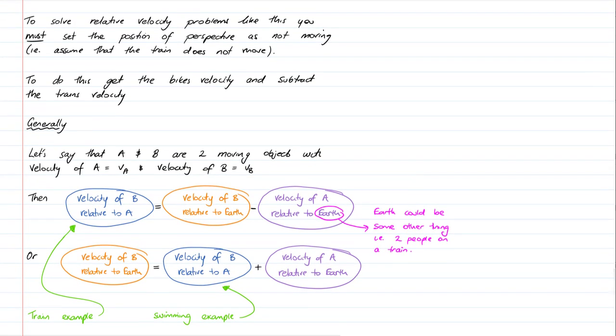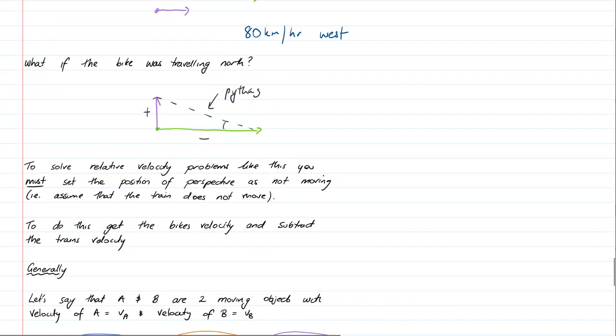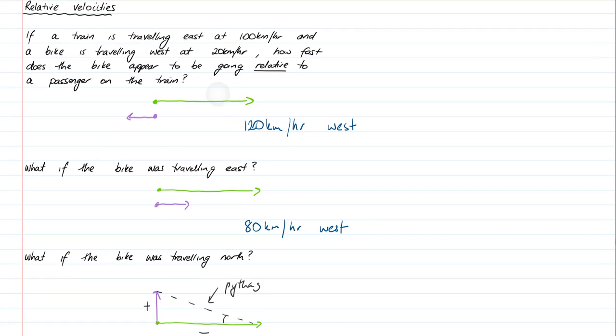To solve relative velocity problems like this, you must set the position of perspective as not moving. So the person on the train is not moving. To do this, we get the bike's velocity and we subtract the train's velocity. So if the person's not moving, we have to subtract their velocity away from them. We subtract their velocity away from the situation, but we add any other relevant velocities on. That means we get the 20 kilometers west, which I'm going to denote in I form as -20I, and we subtract the 100I, giving us -120I.